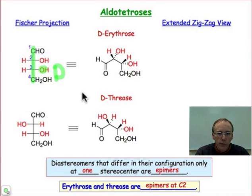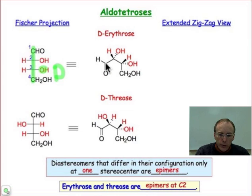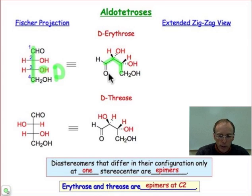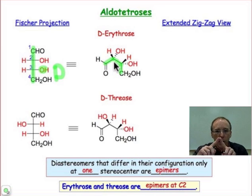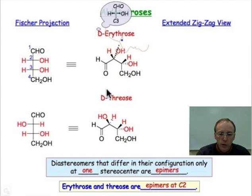What we need to do is convert this Fischer projection into a structure that we're more used to looking at — the line angle drawing. The planar zigzag form is the way we see it, but the view shown in the middle is most convenient for comparing to the Fischer projection, because in this view all of the wedges are pointing upward.